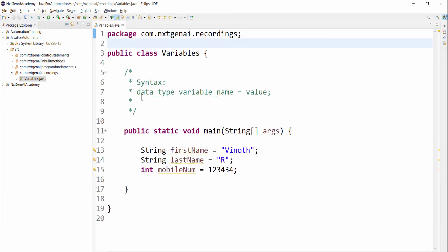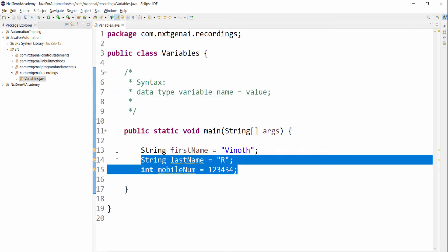Then in order to declare a Java variable, first we have to mention the data type, then variable name, assignment operator that is single equal to, then the value. So this is the syntax we have to follow to declare the Java variable and sample you can see it here.